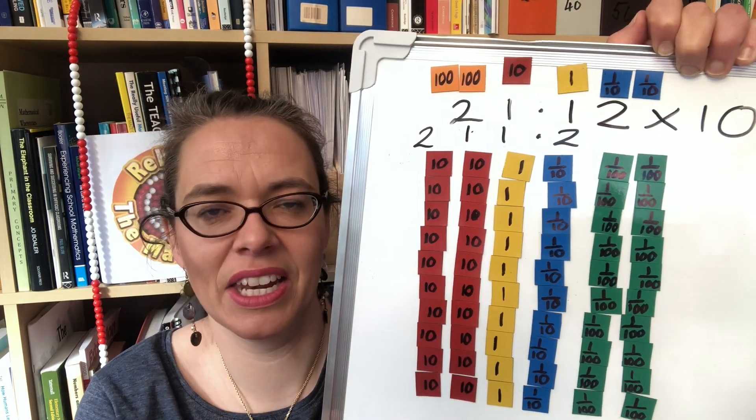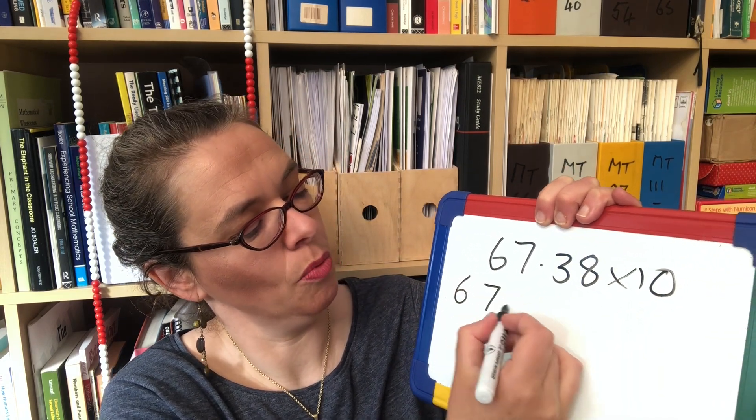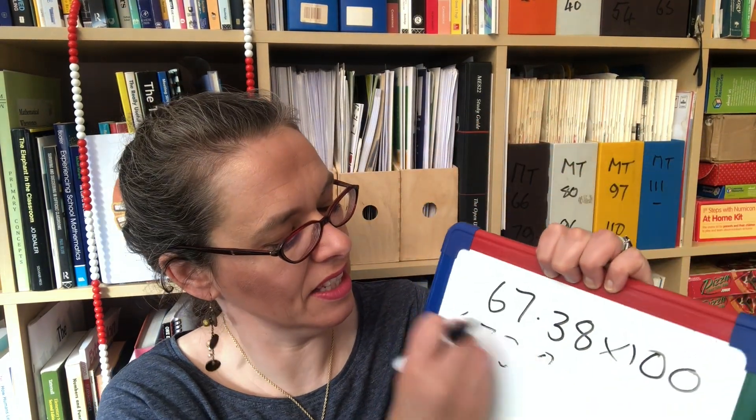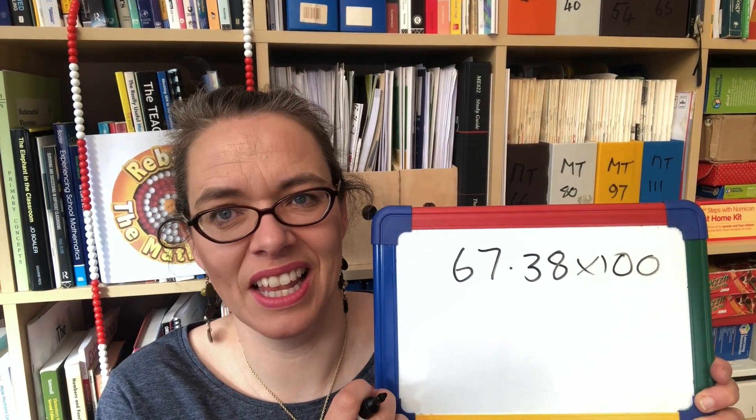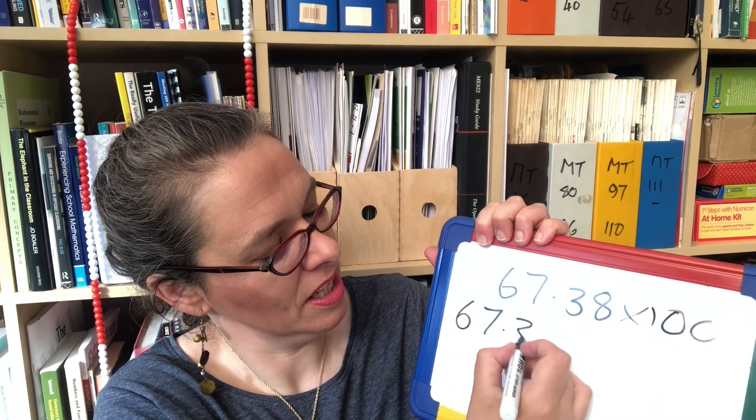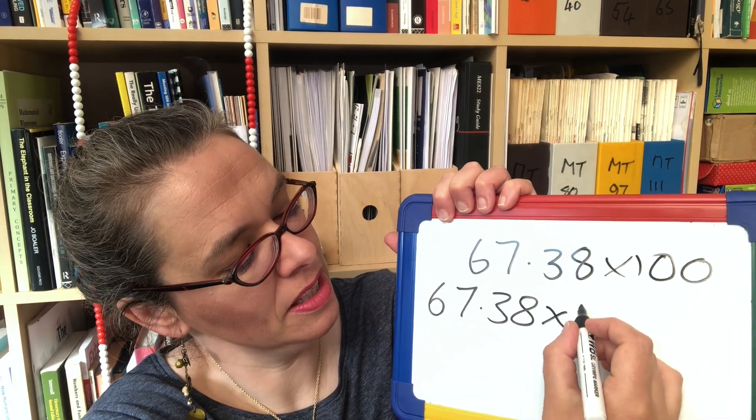So what about multiplying by 100? So we've now got to the stage where if you're multiplying a number by 10, 1667.38, a child is going to be able to confidently move every digit one place to the left like that. The question now becomes what about multiplying by 100? Obviously the answer isn't going to be the same and obviously there's another trick we just move two places to the left but why? Well the easiest way to explain it is to look at the fact that 67.38 times 100 is 67.38 times 10 times 10.